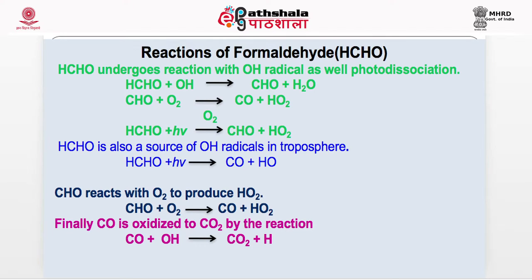Reaction of formaldehyde: formaldehyde reacts with OH radical by abstraction of a hydrogen atom to give CHO and H2O. CHO plus O2 forms CO and HO2. HCHO in the presence of light is photolyzed, and reaction with O2 gives CHO and HO2. HCHO is a source of OH radicals in the troposphere.